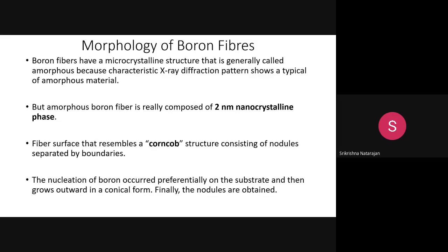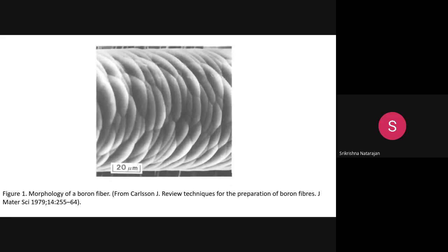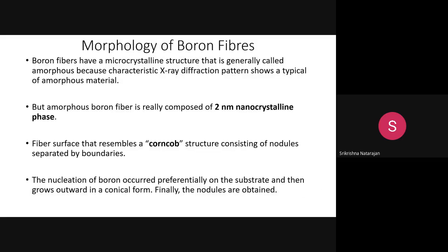The surface morphology of this fiber has a microcrystalline structure — generally called the amorphous phase. When observed by X-ray diffraction, some amorphous material is seen on the surface. This amorphous boron fiber contains a nanocrystalline phase of around two nanometer size. The structure resembles a corn cob structure — like a maize corn — with many nodules on the surface.